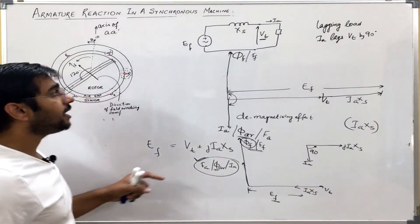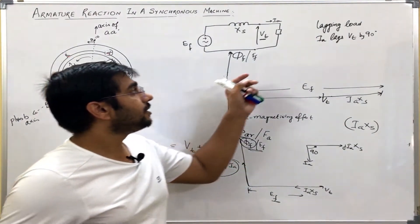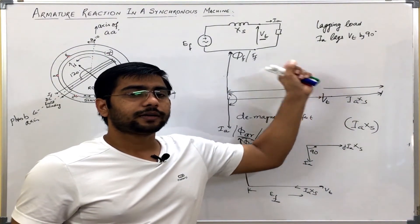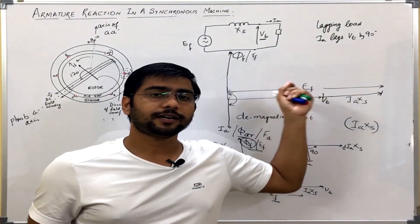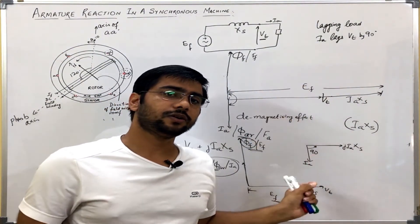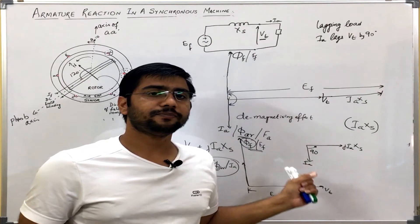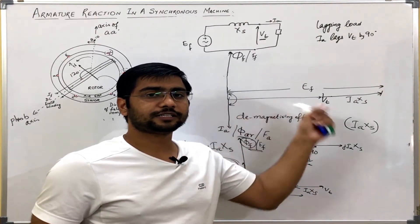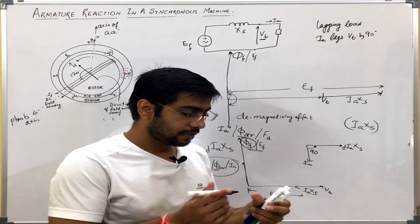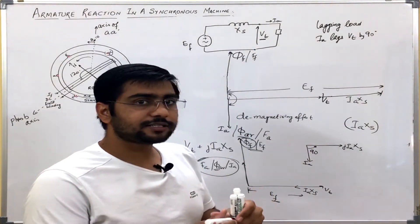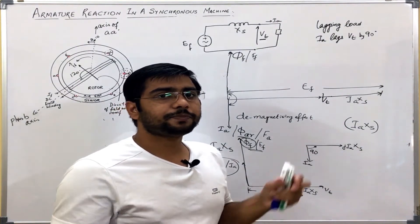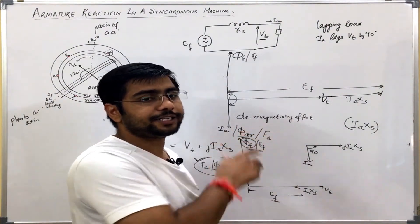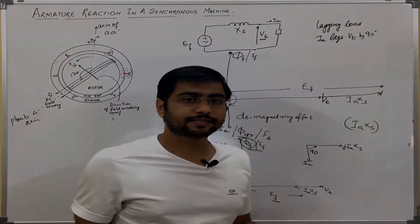So in this way we have seen that lagging load creates a demagnetizing effect and a leading load creates a magnetizing effect on this synchronous machine. Now let us see what is the effect on the power factor if I vary the excitation.